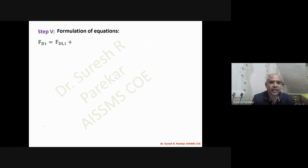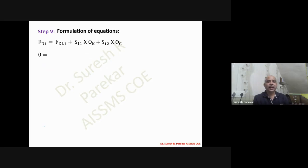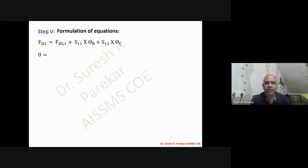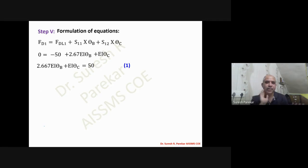Formulating equations: FD1 = FDL1 + S11·θB + S12·θC. In most cases FD = 0 unless an external couple acts. Substituting all values gives the first equation: 2.667EI·θB + EI·θC = 50.